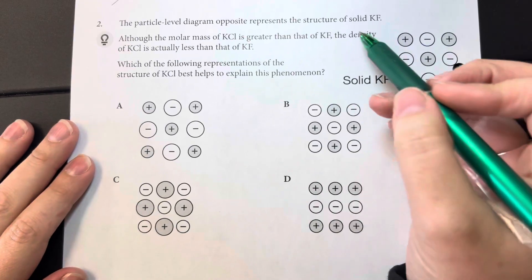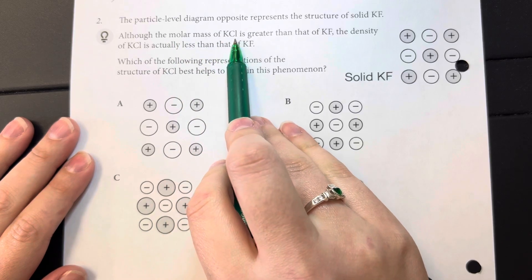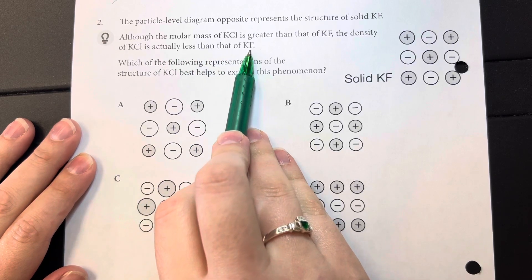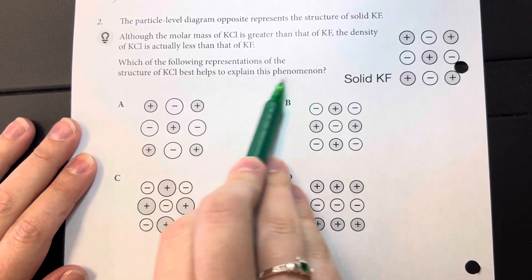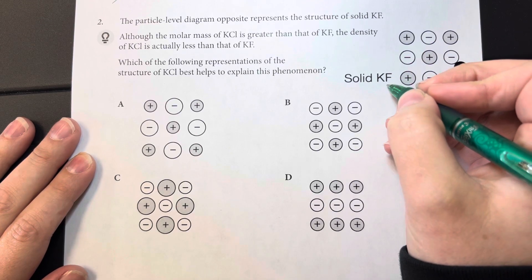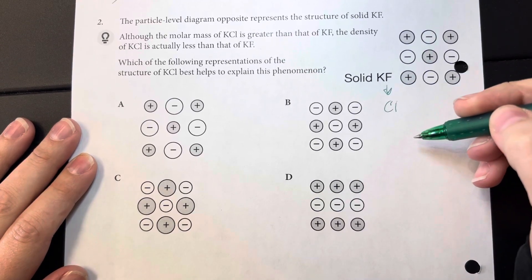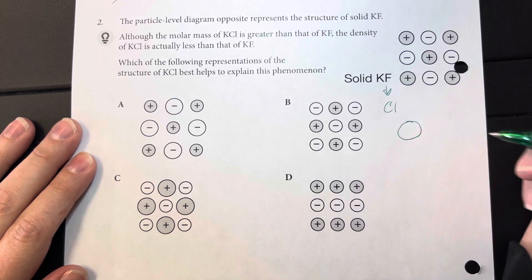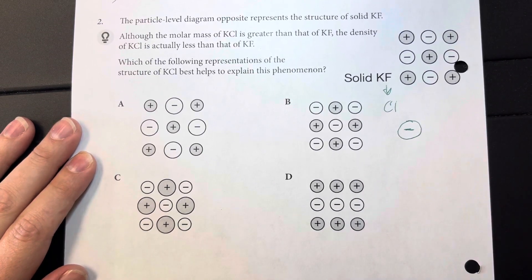The particle level diagram opposite shows the structure for solid potassium fluoride. Although the molar mass for potassium chloride is greater than that of potassium fluoride, the density of potassium chloride is less than that of potassium fluoride. Which of the following representations of the structure of potassium chloride would represent and explain this phenomenon? My difference is that I'm changing fluorine for chlorine. Chlorine is one further down on the group for halogens, which means that it is going to be a larger molecule. Same number of negatives, but it is going to be larger than that of fluorine.